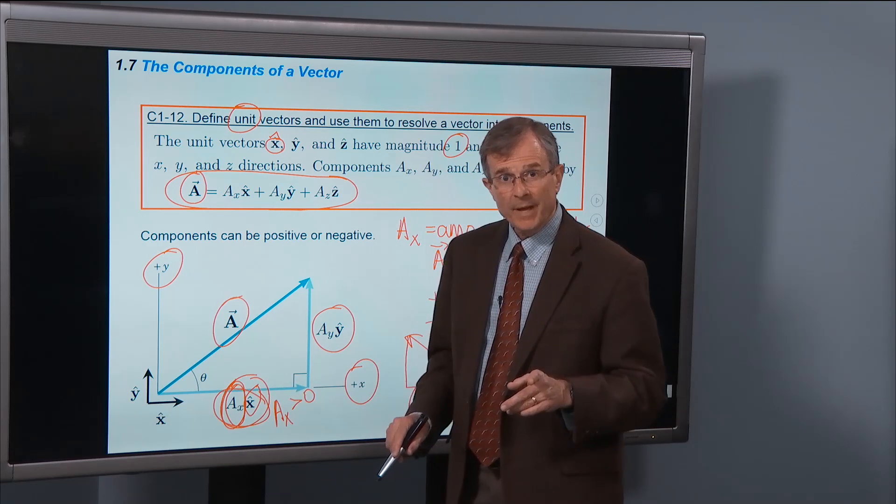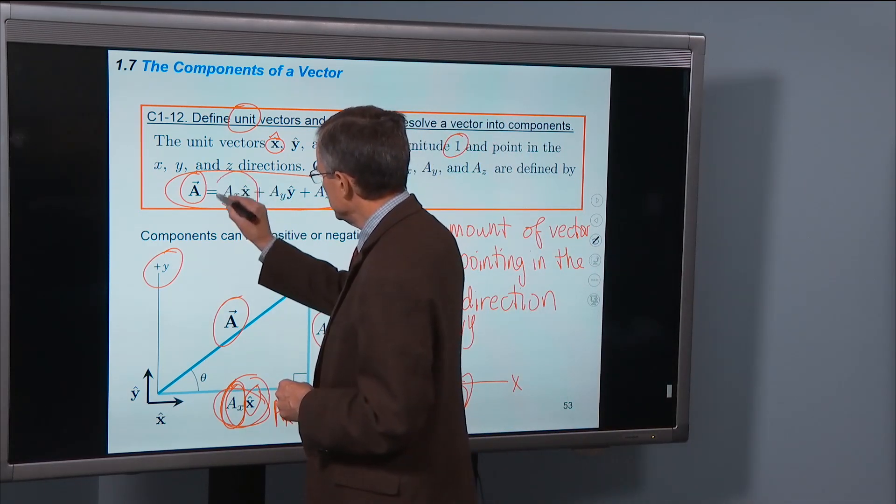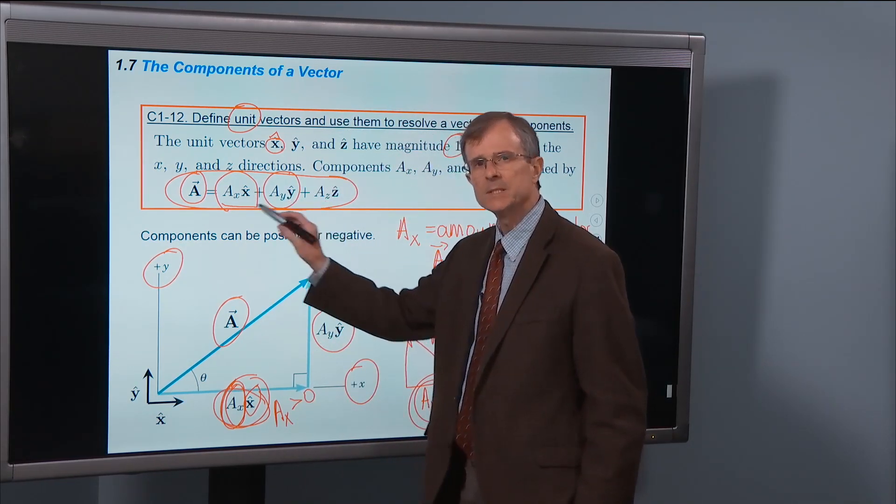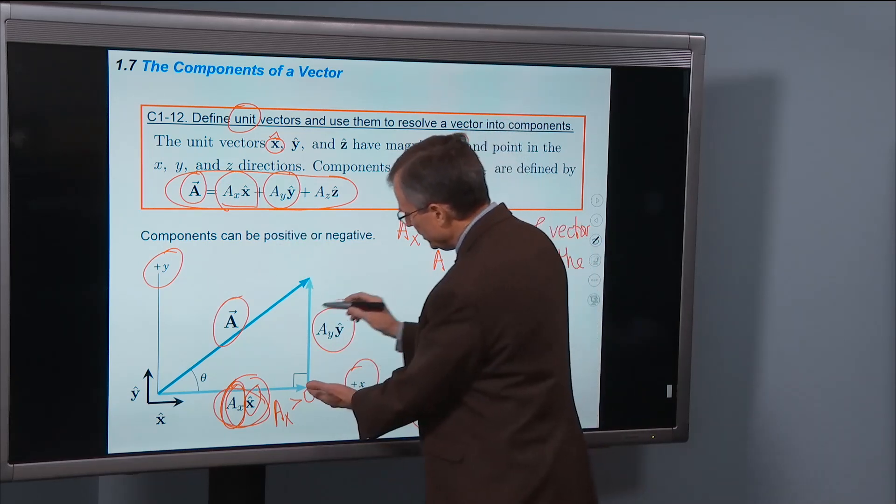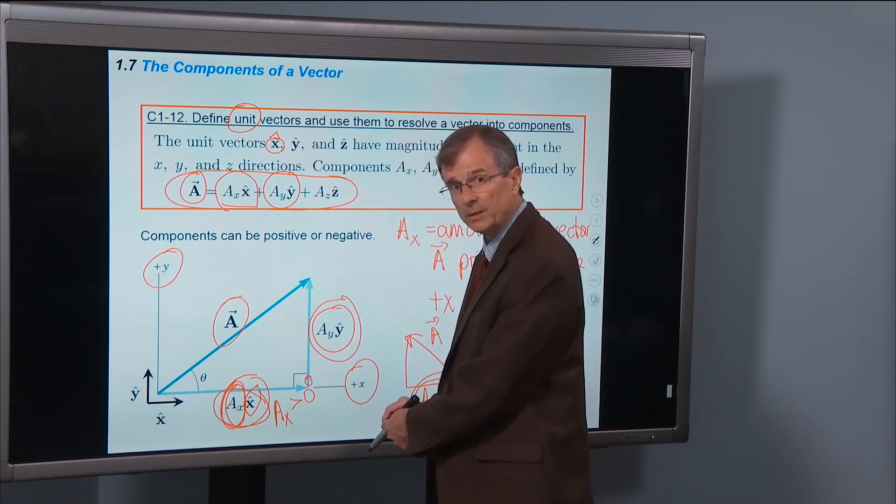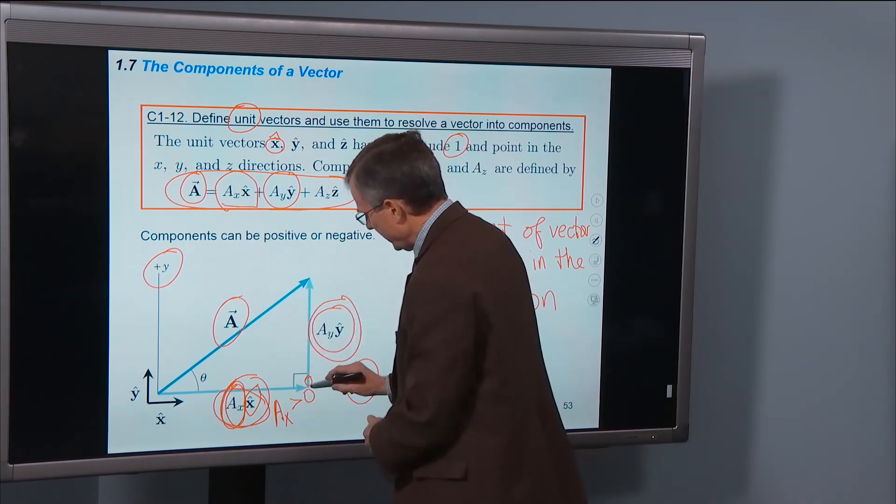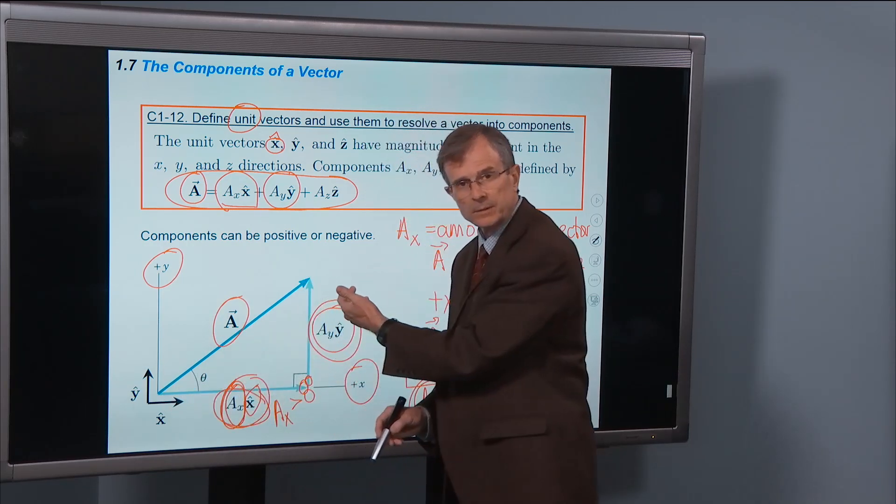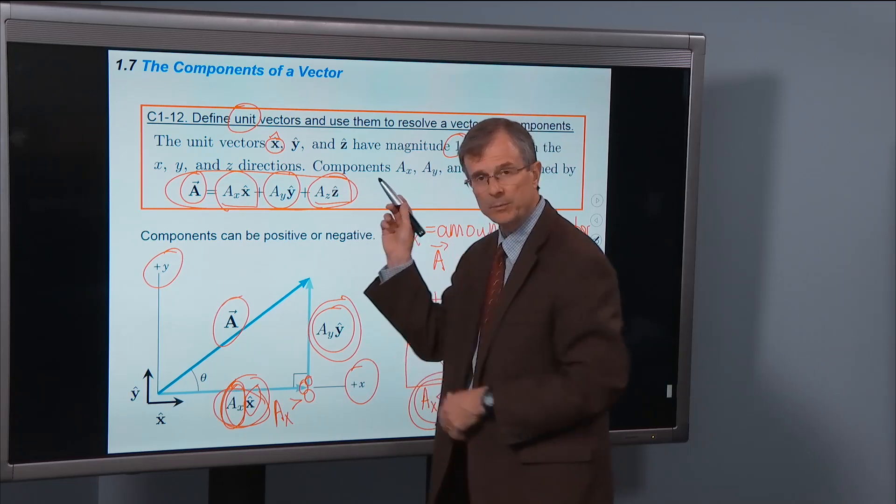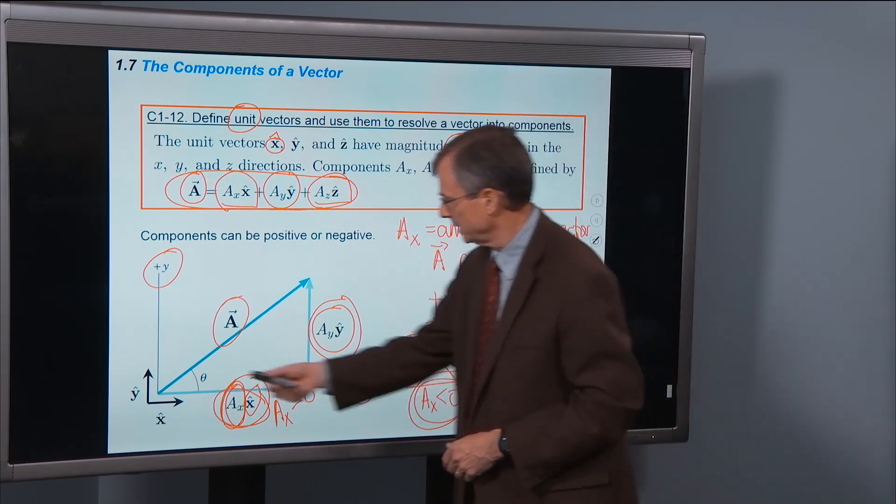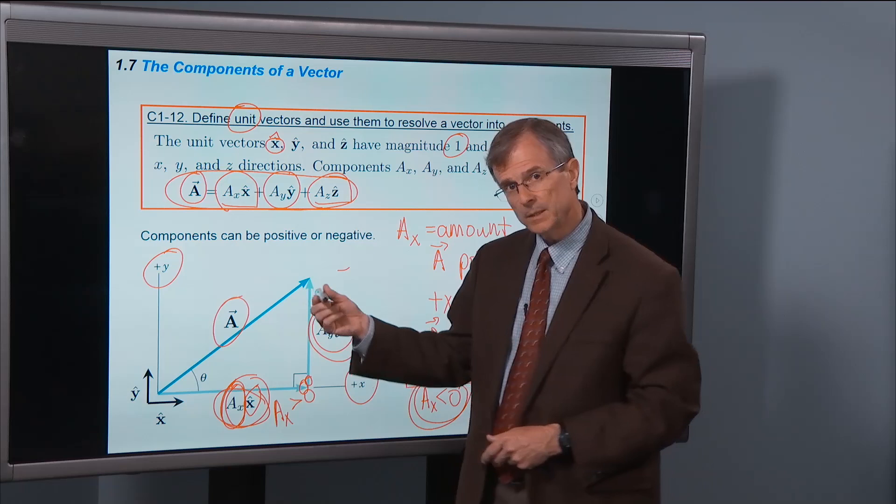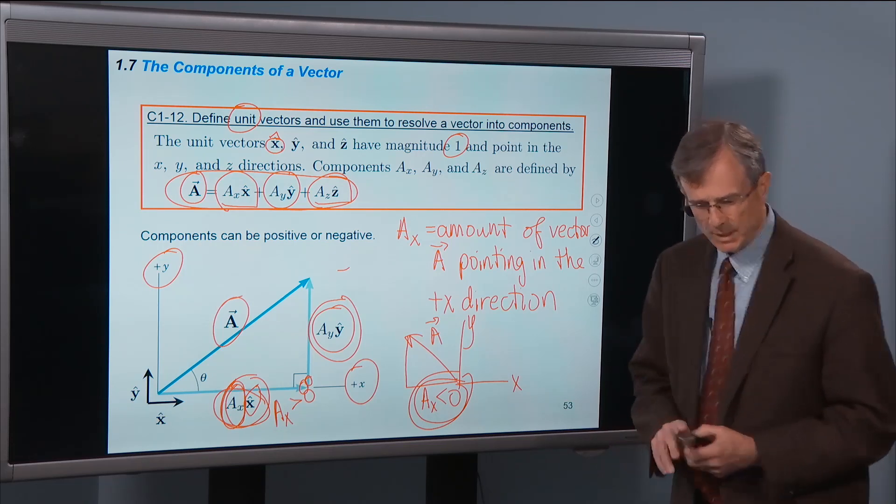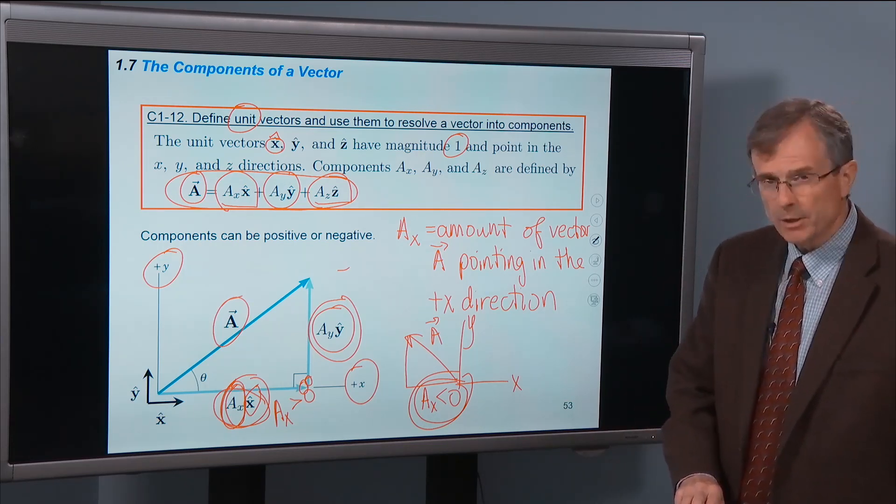We know how to add vectors. If we just think of this as a vector and add it to this vector, I have to put the tail of the second vector at the head of the first vector. Here's the second vector. Here's his tail. And I'm going to place it at the head of the first vector and then find the resultant vector here, with a similar thing happening if we have a z component. We would add another vector in the z direction to get the final vector A. So it's nothing new, just a way of characterizing a vector.